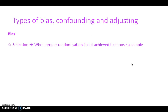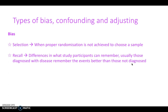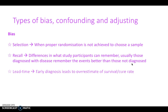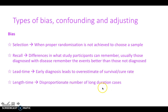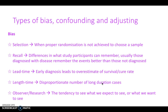Lastly, we look at bias. Selection bias occurs when proper randomisation is not achieved in choosing a sample. Recall bias is when people remember things differently — those with a diagnosed disease may remember events more clearly than those without a diagnosis. Lead time bias is when early diagnosis leads to an overestimate of survival or cure rates. Length time bias refers to a disproportionate number of long-duration cases. Observer or researcher bias is the tendency to see what we expect or want to see in a study, when the reality may differ.